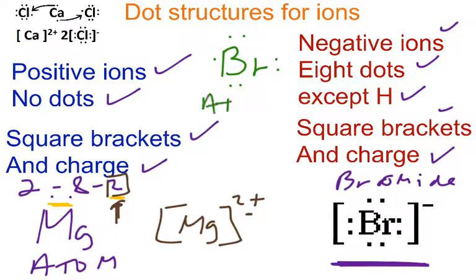So this is for a neutral atom. But for ions, once again, we have square brackets, we have our charge, square brackets, and we have 8 dots around the atom itself. So that's how you represent the ion.